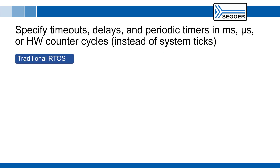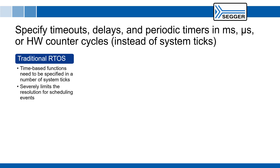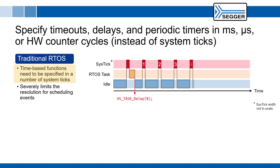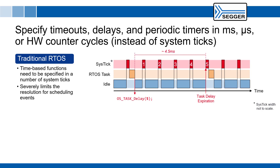Furthermore, in a traditional RTOS that uses periodic system tick interrupts as both the time base as well as for scheduling, all timeouts, delays, and periodic timers need to be specified in a number of system ticks instead of a certain amount of time. This means that their expiration is always aligned with the periodic system tick interrupt, which severely limits the resolution for scheduling events.